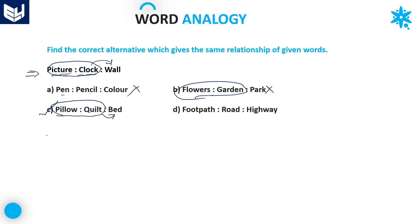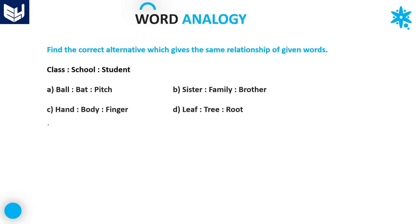Most of the students are confused by seeing all the options, thinking each and every option is satisfying the condition. But there is a small variation between each and every option, so we have to be very careful about that. The answer for this question is pillow and quilt — these two are laid on bed. Option C is the right answer.